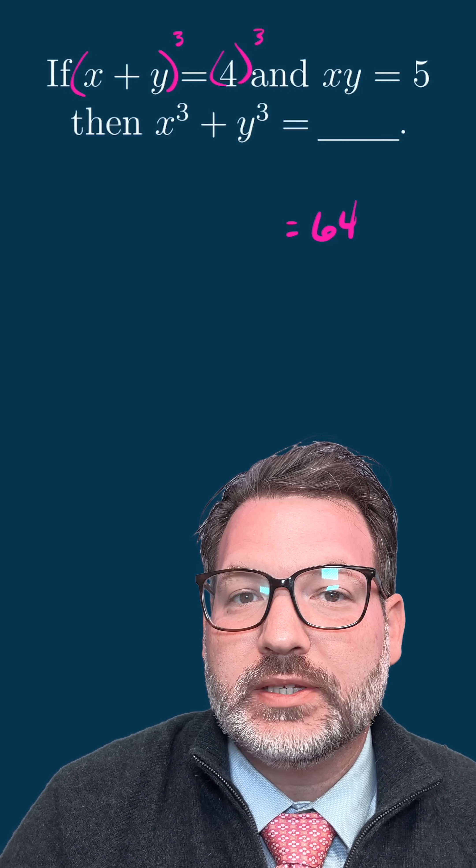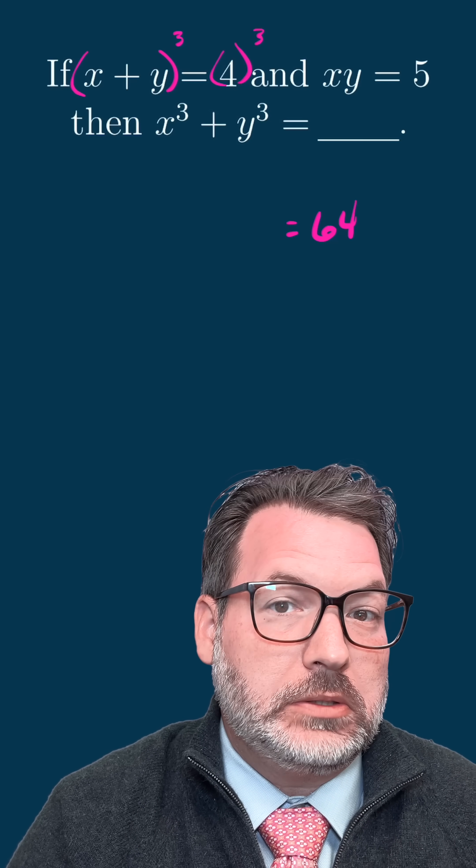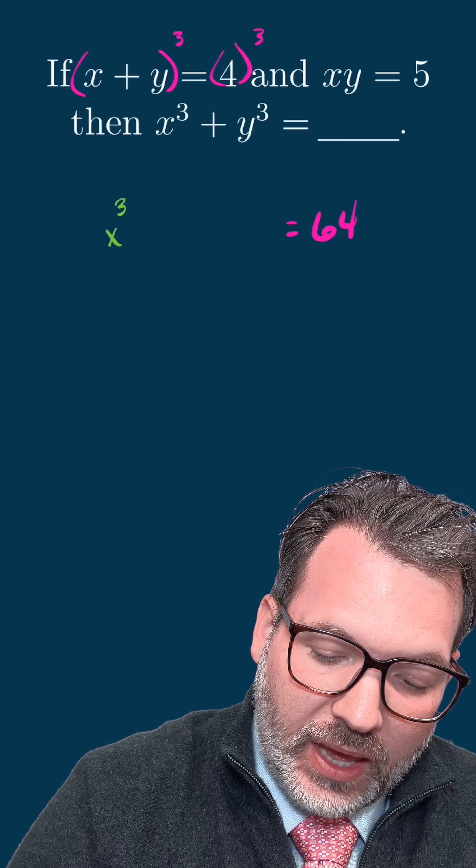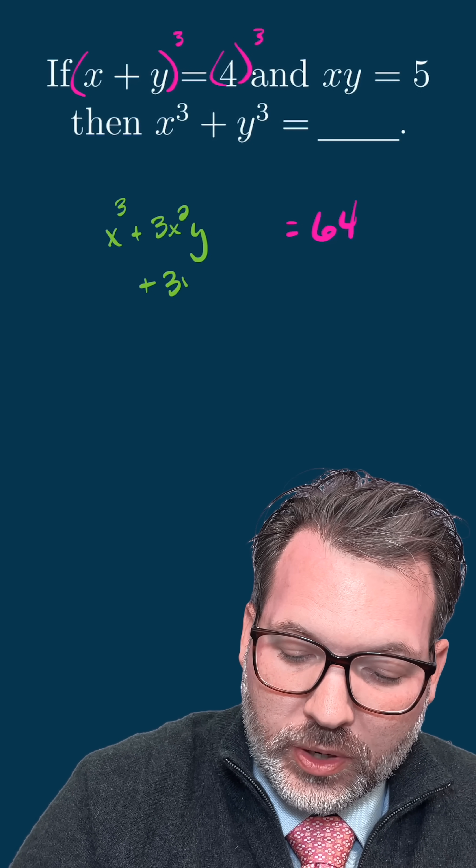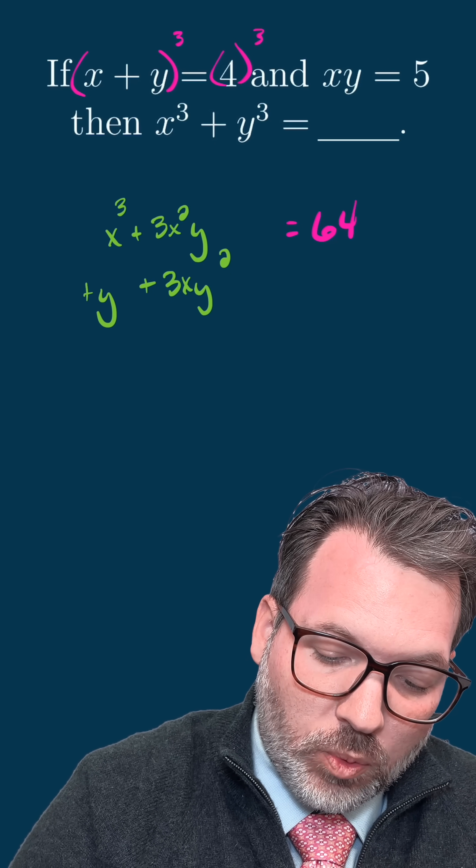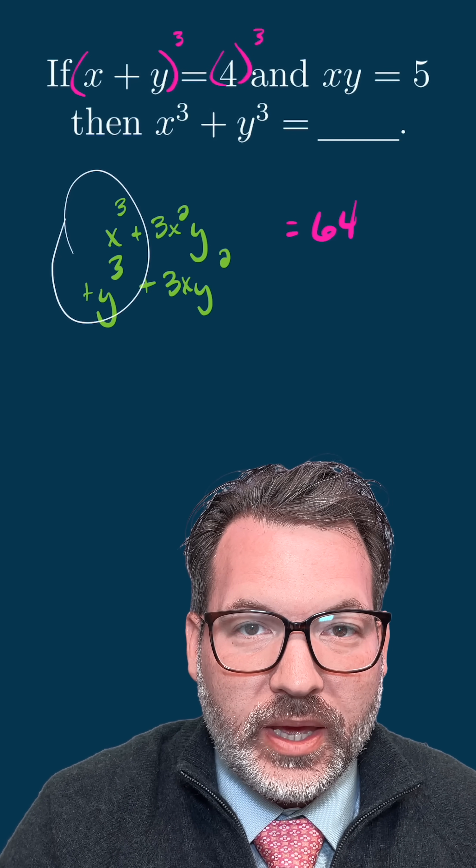I can definitely expand this out using something like binomial theorem, or if I don't want to get fancy, just FOIL, and that should give me back x cubed plus three x squared y plus three x y squared plus y cubed. And obviously, it's this x cubed plus y cubed that I'm interested in.